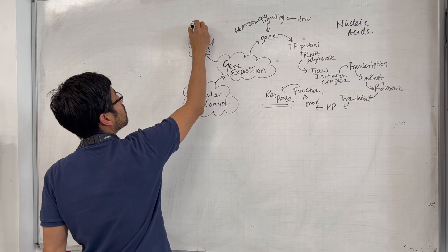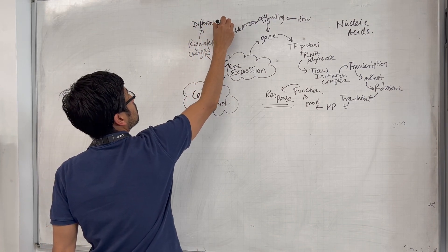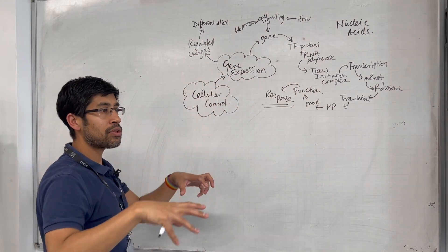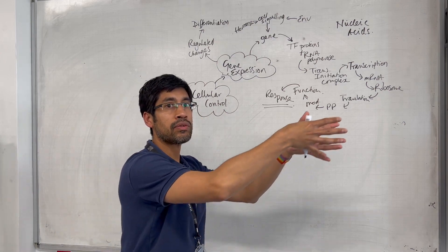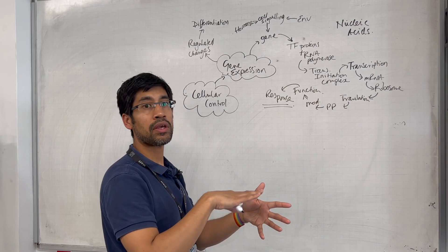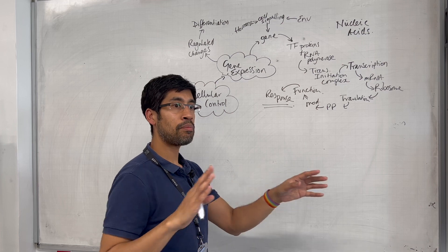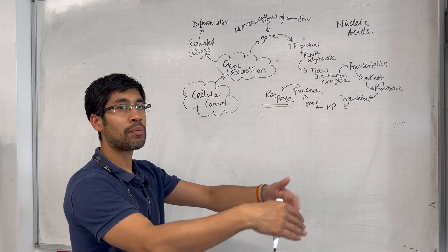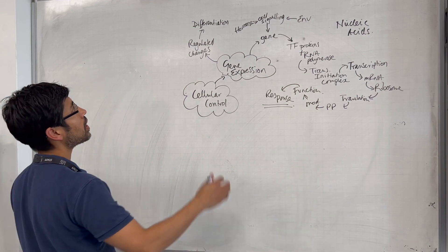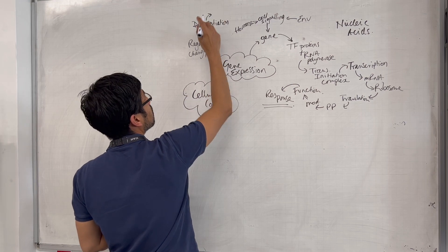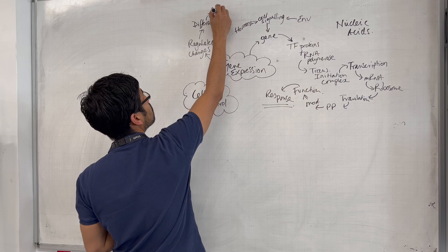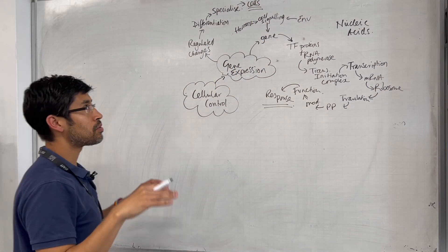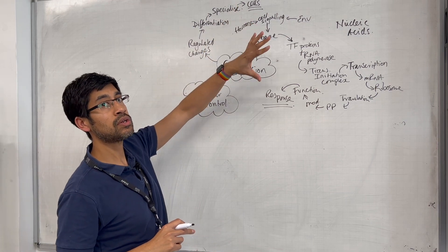The first main example is differentiation. Cells encounter a signal, the signal causes gene expression changes, and the cell starts to become specialised — a stem cell might start to become a muscle cell because it's now expressing the genes for myosin, actin, all the proteins needed to build the sarcomere. Or it might be expressing proteins to form the axon for it to become a nerve cell. Differentiation results in gene expression changes which allow the cell to specialise.